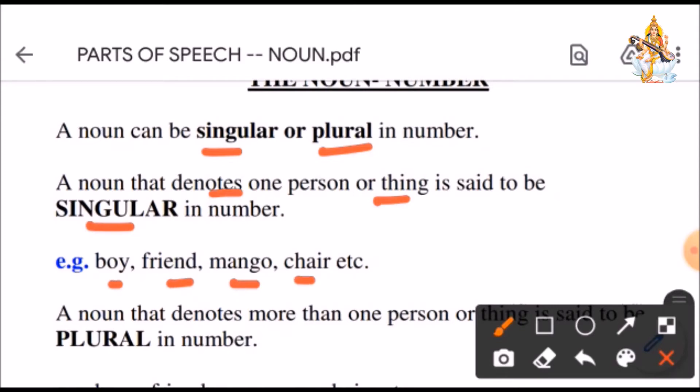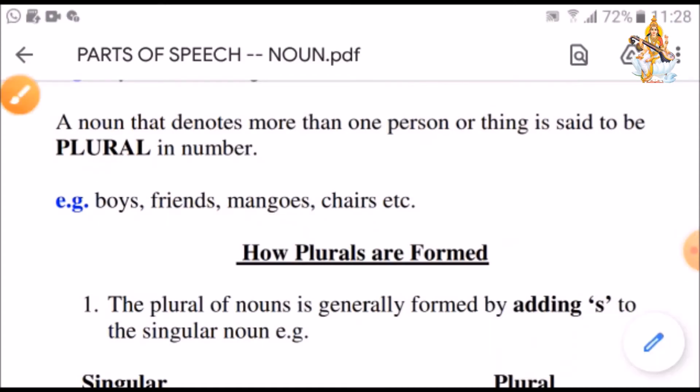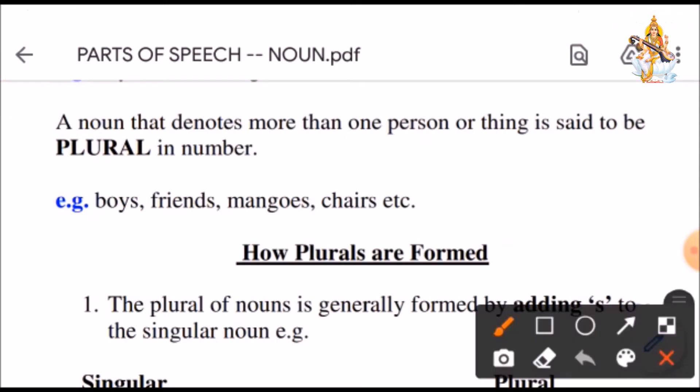So, singular is when we talk about one person, one thing, etc. A noun that denotes more than one person or thing is said to be plural in number. For example, boys, friends, mangoes, chairs, etc.